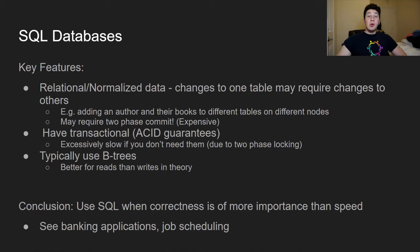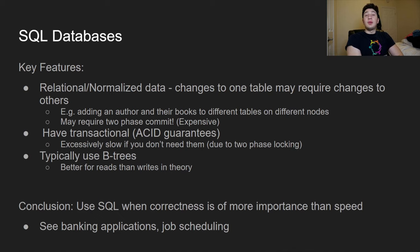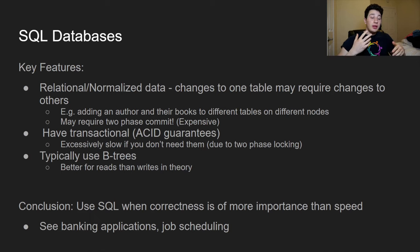SQL is really good when correctness is more important than speed — for instance, when you're dealing with transactions that modify multiple rows at once and you want to make sure all of those things happen or don't. A bank transaction is a perfect example: you can't have it be the case where I gain a hundred dollars but you never lose your hundred dollars. Another good situation is job scheduling, where you're editing multiple rows of a status table and want those updates to stay in sync.